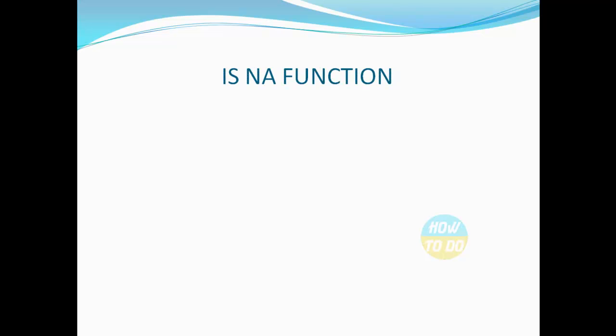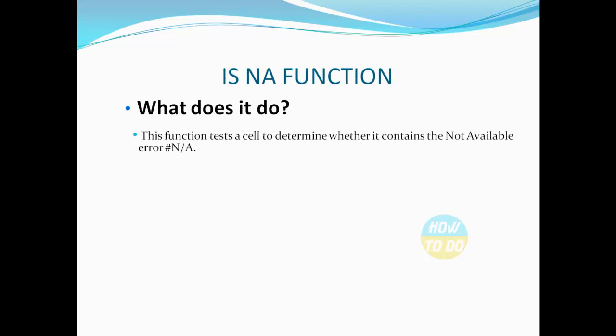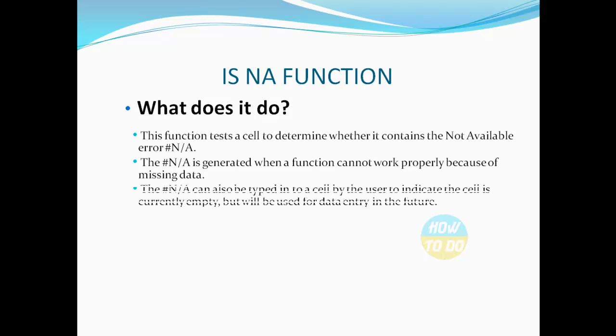Let's see what the isNA function is and what it does. This function tests a cell to determine whether it contains the non-available error, i.e. #NA. The #NA error is generated when a function cannot work properly because of missing data. The #NA can also be typed into a cell by the user to indicate the cell is currently empty but will be used for data entry in the future.